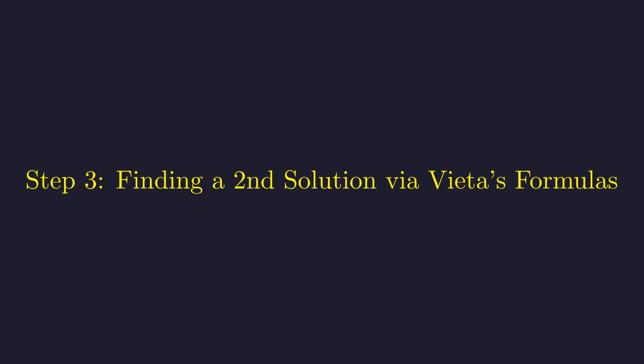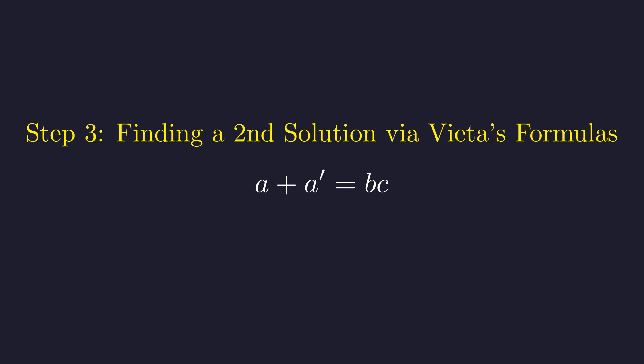Our quadratic must have another root. Let's call it a prime. By Vieta's formulas, the sum of the roots equals the coefficient b times c. To find a prime, we simply subtract a from both sides.